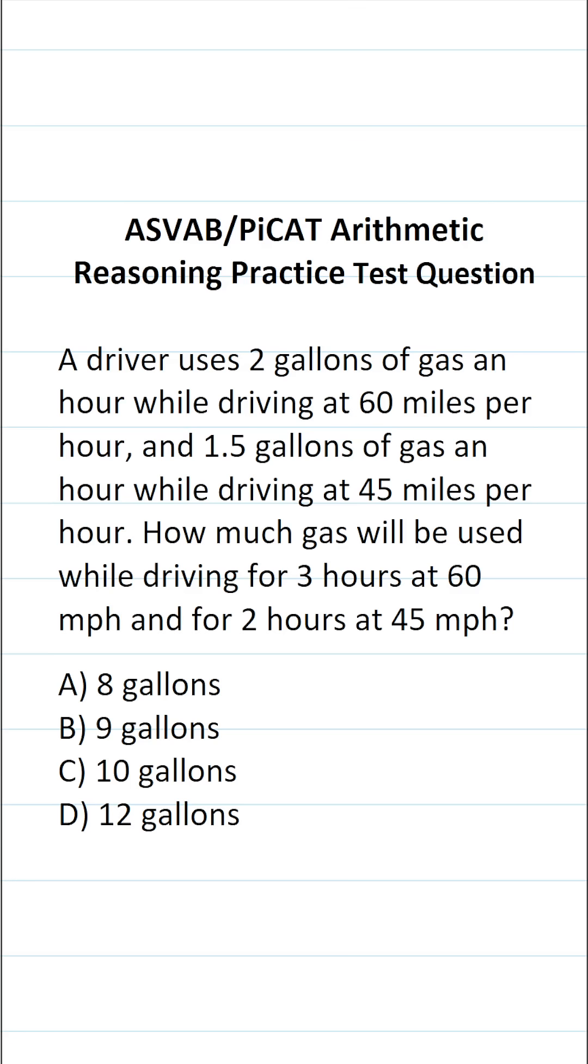All right, so in this case we know they're driving for three hours at 60 miles per hour and they use two gallons of gas per hour at 60 miles per hour. So the amount of gas used for those three hours is going to be three times two, which is going to be six gallons.